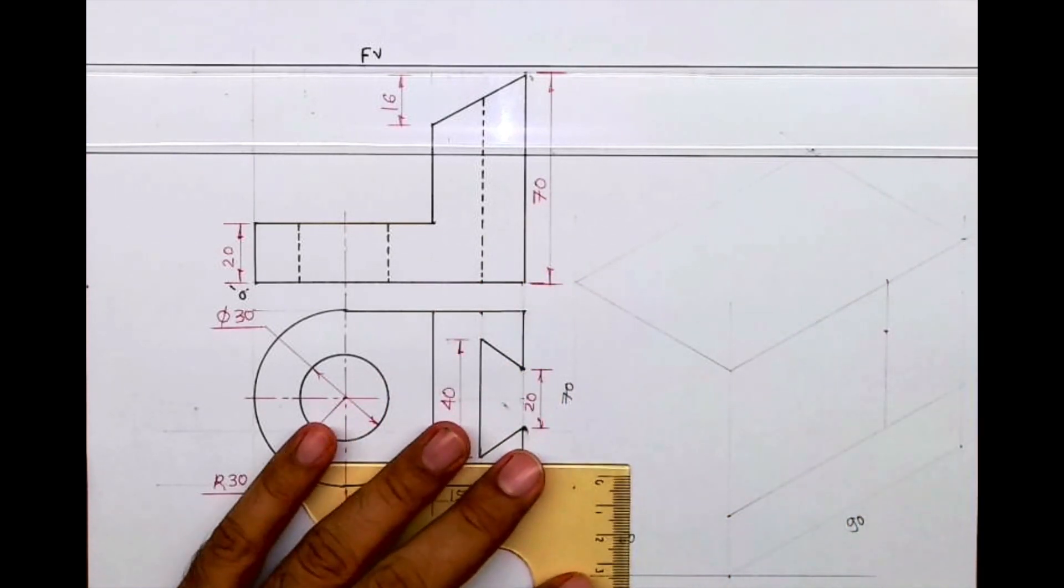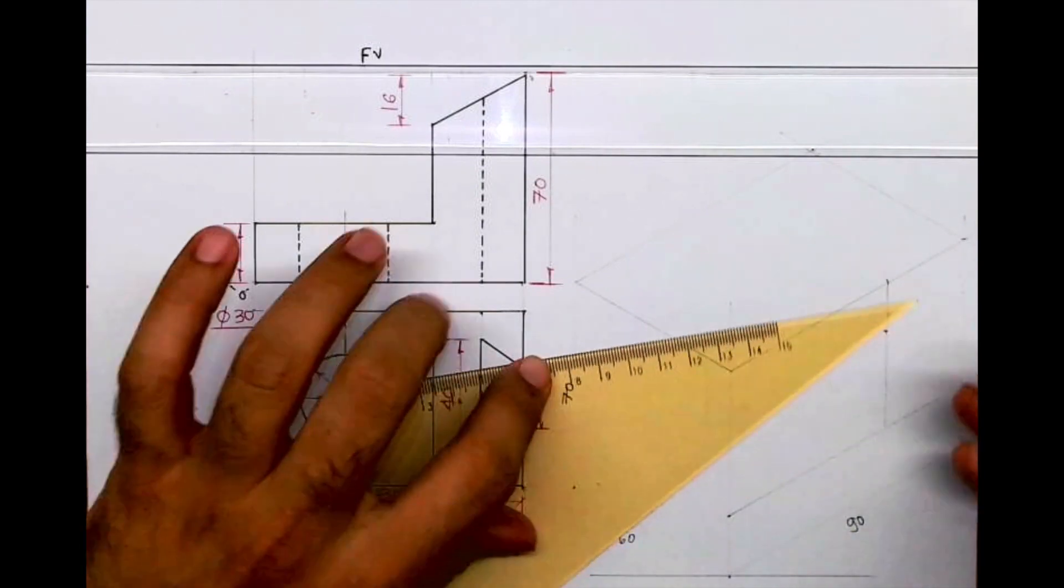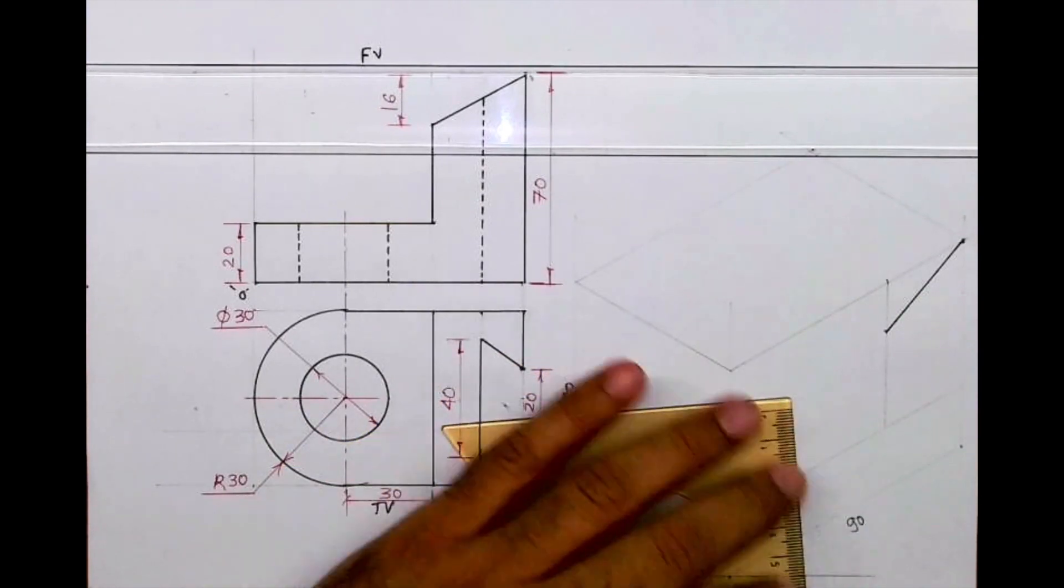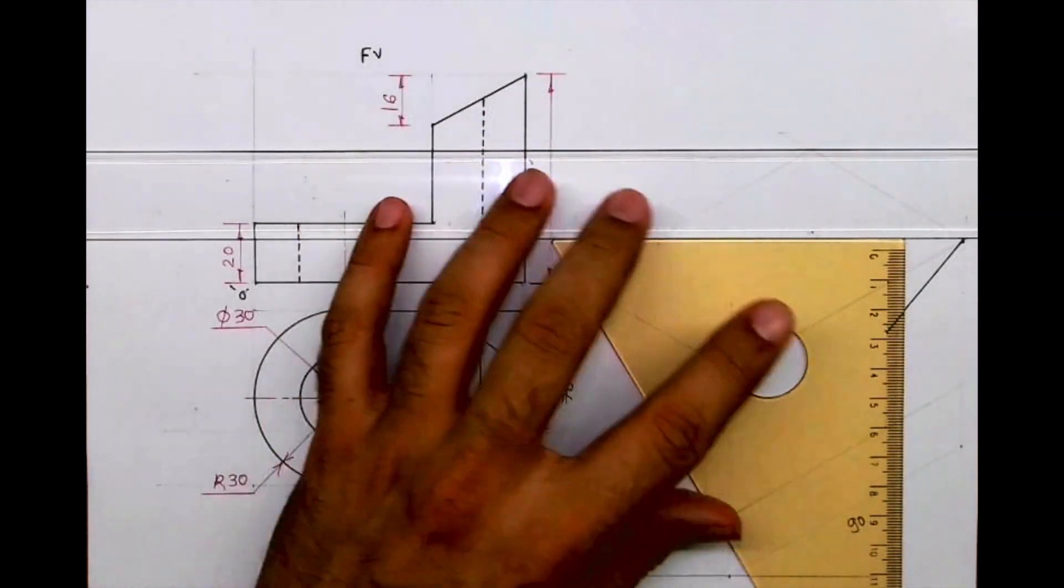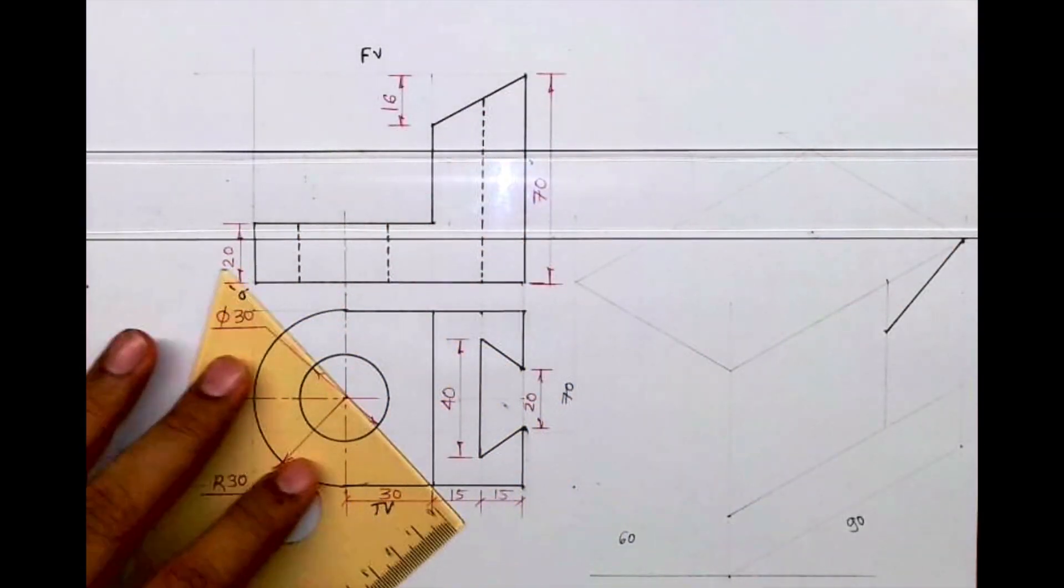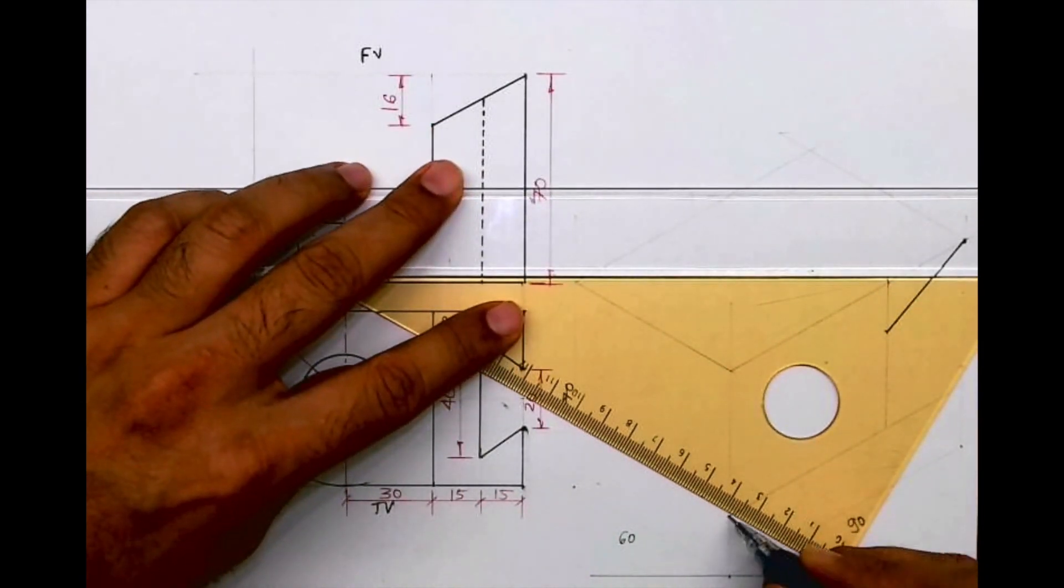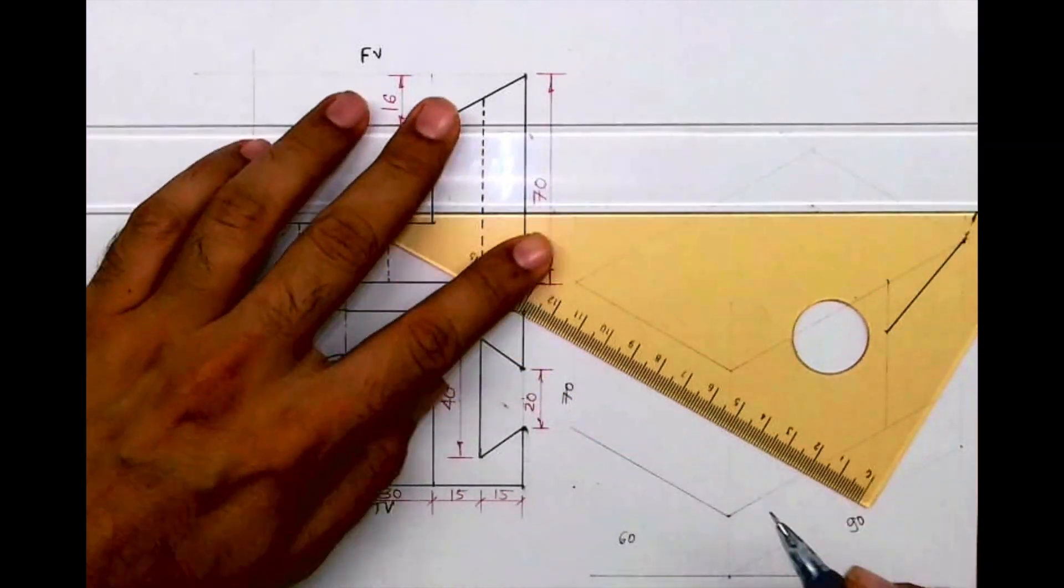Then I'll go down by 16, then I will join this. Then from here I'll take 60.